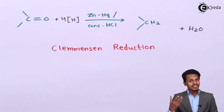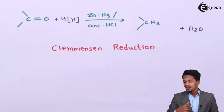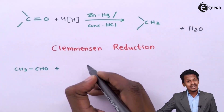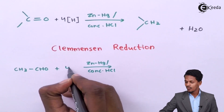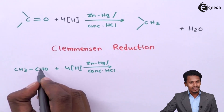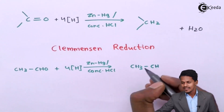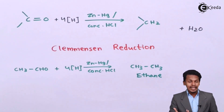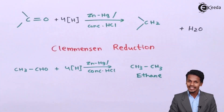For example, consider acetaldehyde (CH3CHO) reacted with zinc amalgam and concentrated HCl. This produces four nascent hydrogen atoms, and the C=O is converted into CH2-H, which is CH3. So the product is ethane. This is how we can convert an aldehyde into an alkane using the Clemmensen reduction.